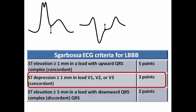The second Sgarbossa criterion is ST-depression of more than or equal to one millimeter in leads V1, V2, or V3, which is also concordant. Because these right precordial leads usually show predominantly negative QRS complexes — either a QS pattern or a small R wave with an S wave — ST-depression in these leads is concordant with the QRS. Concordant ST-depression of ≥1mm in V1-V3 scores three points.